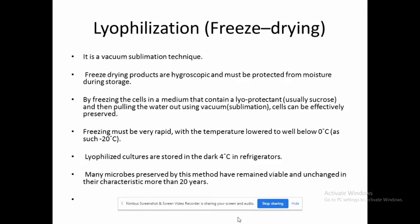Lyophilization involves vacuum drying using a lyophilizer and lyoprotectant. It is a vacuum sublimation technique where freeze-dried products are hygroscopic and must be protected from moisture during storage. Cells are frozen in a medium containing lyoprotectant and then water is pulled out using vacuum, extensively preserving the cells. The fungal culture is placed in lyoprotectant, then all water is removed gradually using vacuum, and then stored at 0 to minus 20 degrees Celsius in powdery form.